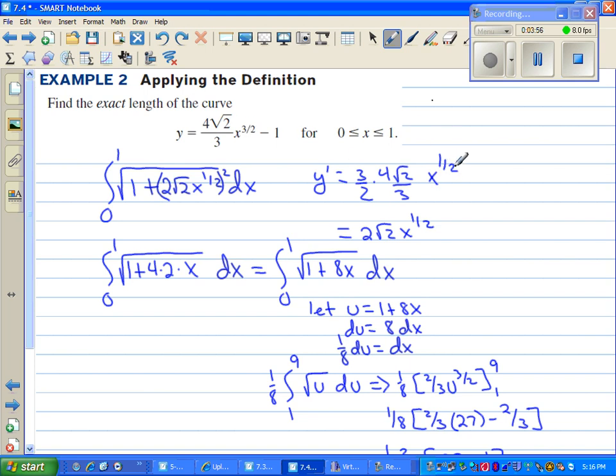We reduce the power by 1. Excuse me, I'm thinking integral for a second. We multiply by 3 halves and then we reduce the power by 1. So the 3's cancel out, the 4 and the 2 cancel out to 2. So you have 2√2 x to the 1 half. That's exactly what we have over here. But remember we're going to square this. 2 squared is 4. Square root of 2 squared is 2. And x to the 1 half squared is just x. So underneath it ends up being 1 plus 8x.